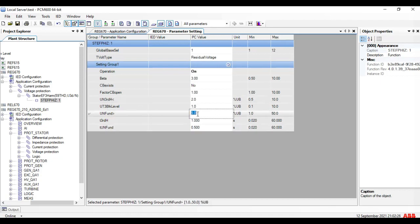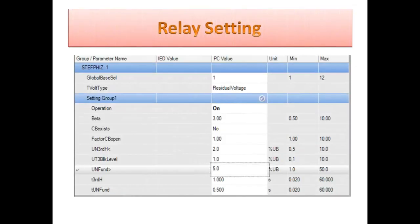In this 95% protection, it has only two settings. One is UNFUND, which is voltage fundamental setting value, and we have to check its tripping time. Only these two we have to set for 95%.